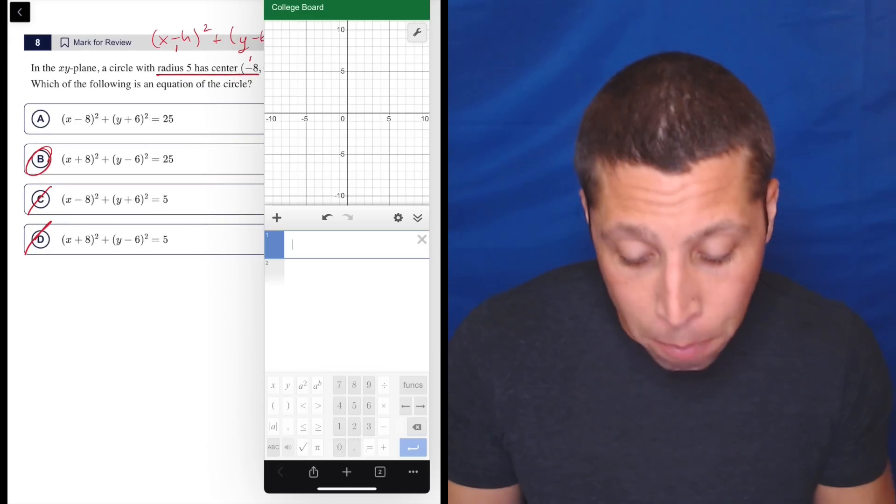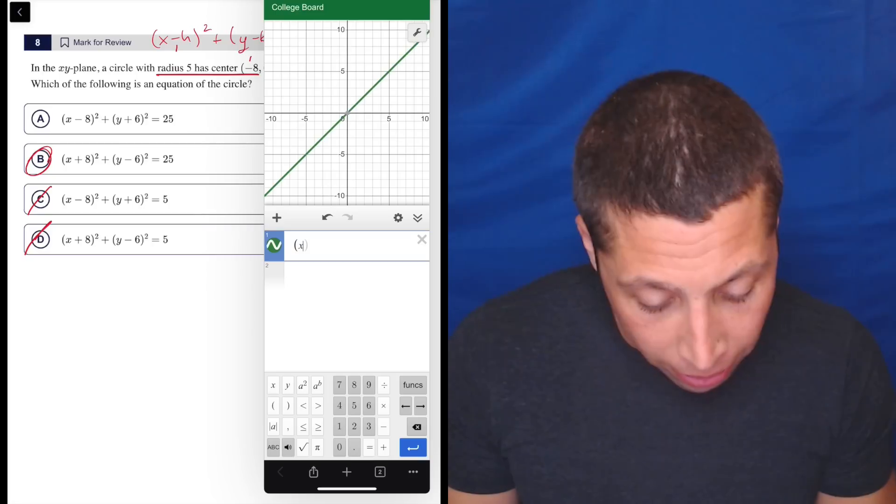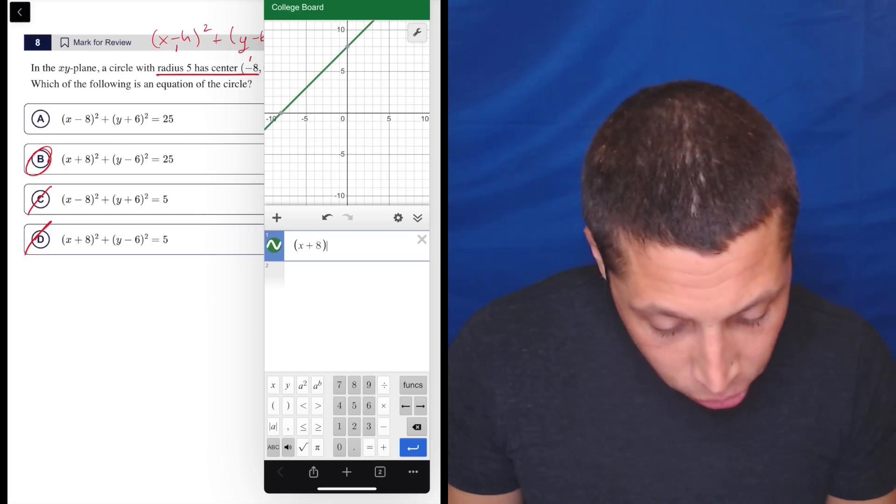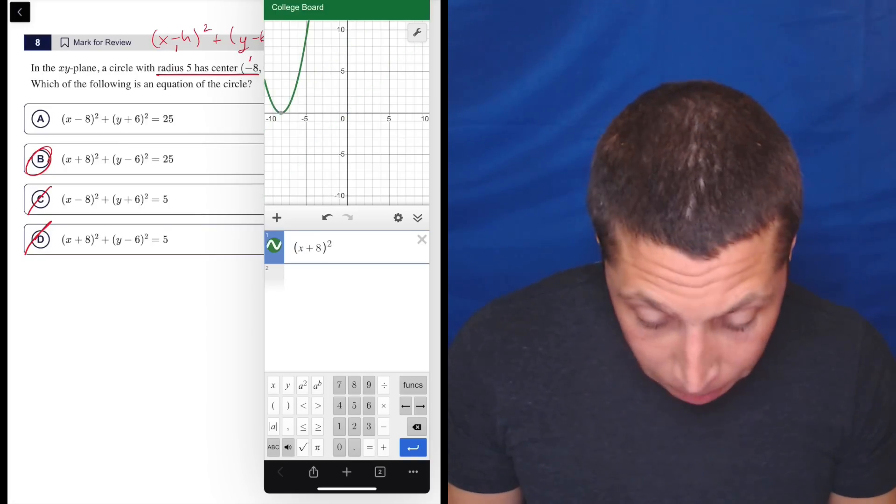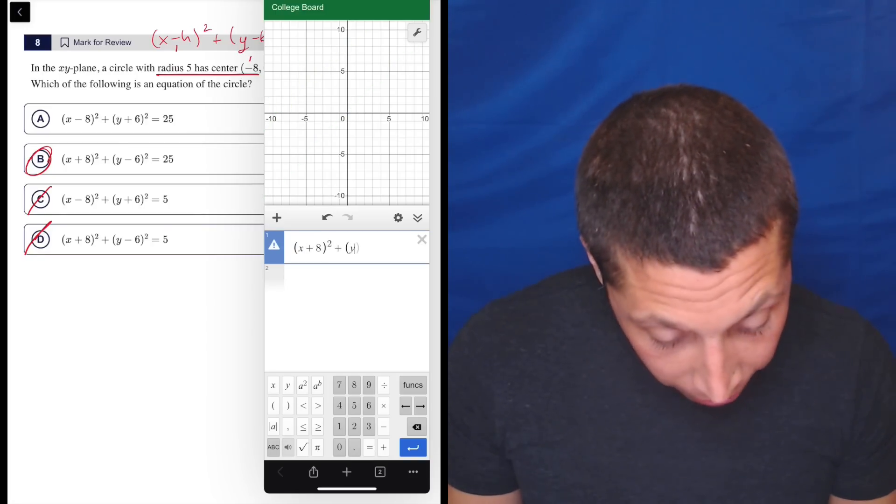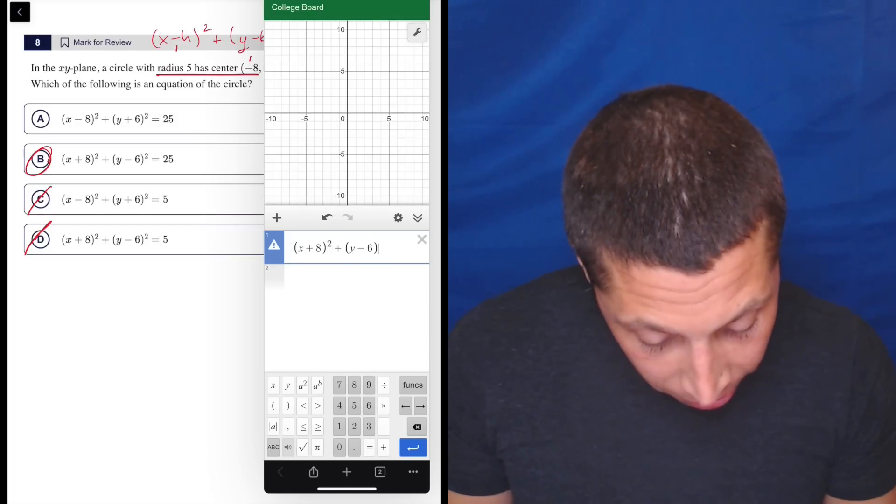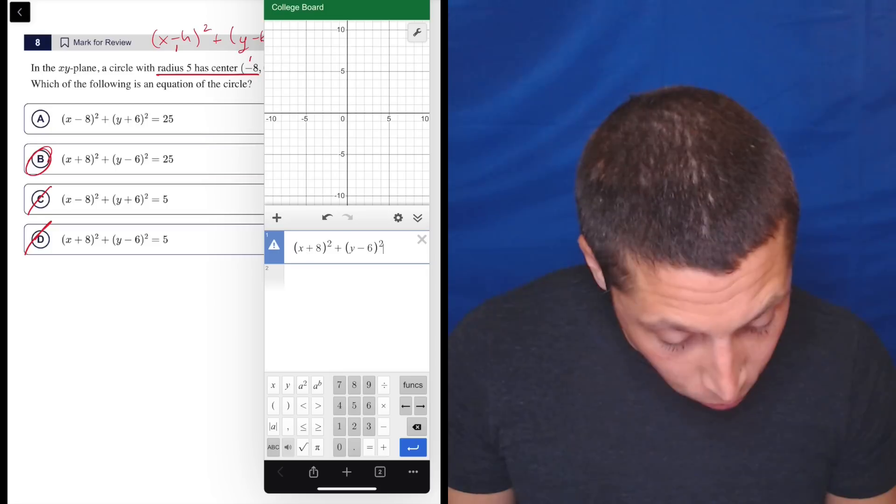So take what you thought. If you thought that B was right, then just type it in: x plus eight squared plus y minus six squared equals 25.